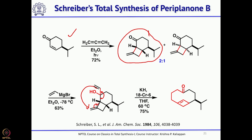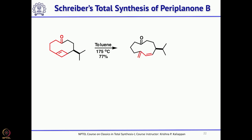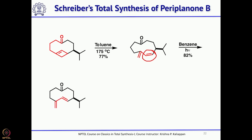The 10-membered ring is fused with the 4-membered cyclobutene ring. Upon heating, the cyclobutene undergoes electrocyclic ring opening to give the diene. However, the internal double bond obtained was cis, whereas in the natural product it should be trans. Fortunately, cis-trans isomerization can be easily accomplished under photochemical conditions, and he successfully isomerized the cis double bond to trans.